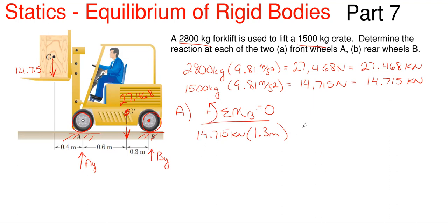The way I have it drawn, its total distance over to point B is 0.9 meters. And then lastly, we have our forklift weight, which is 27.468 kilonewtons with a total distance of 0.3 meters to B, and that will be positive based upon its rotation about that point. That's all we have about point B, so we can rearrange and solve for Ay.